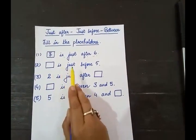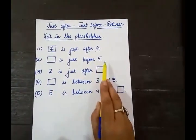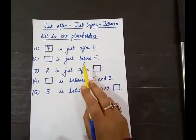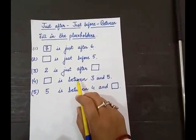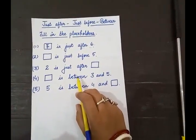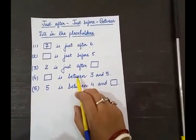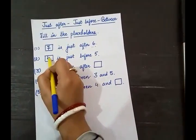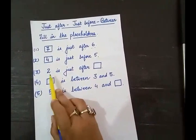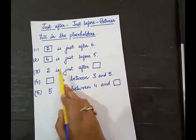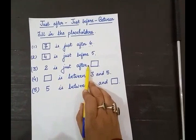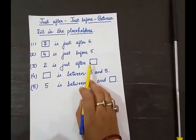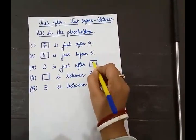Dash is just before 5. Before means pehle — start the counting: 1, 2, 3, 4, 5. What comes before 5? 4. So the answer is 4. Next: 2 is just after which number? 1, 2 — 2 comes after 1, so it will be 1 over here.